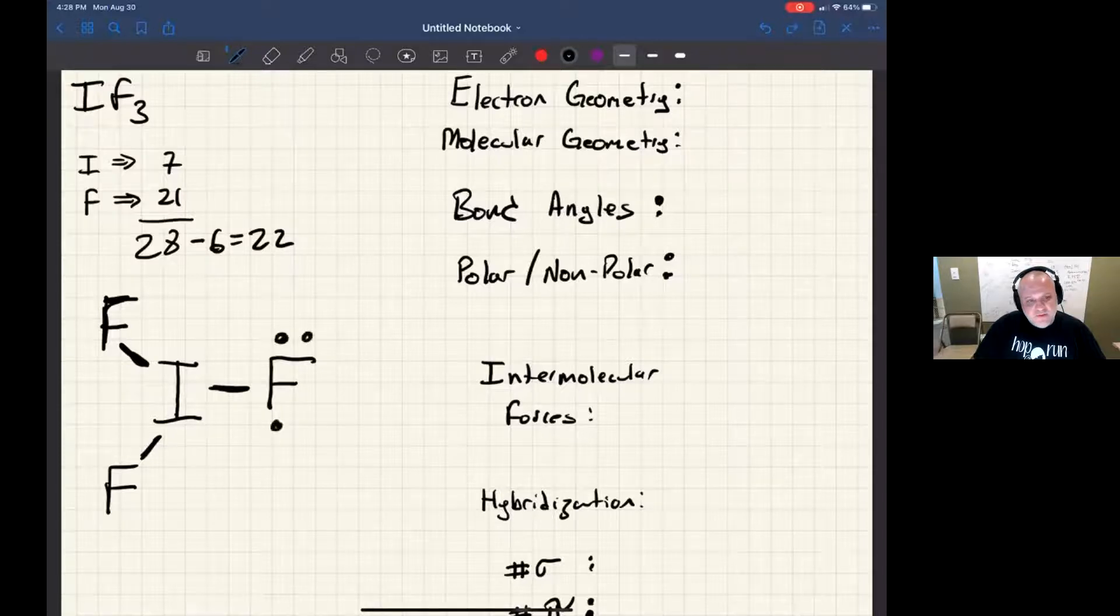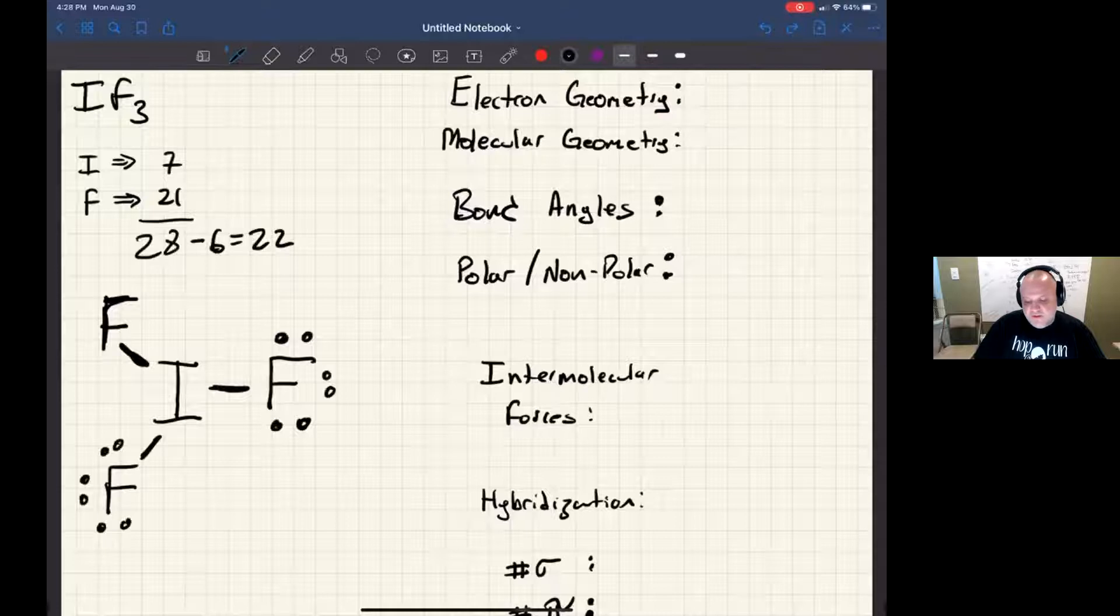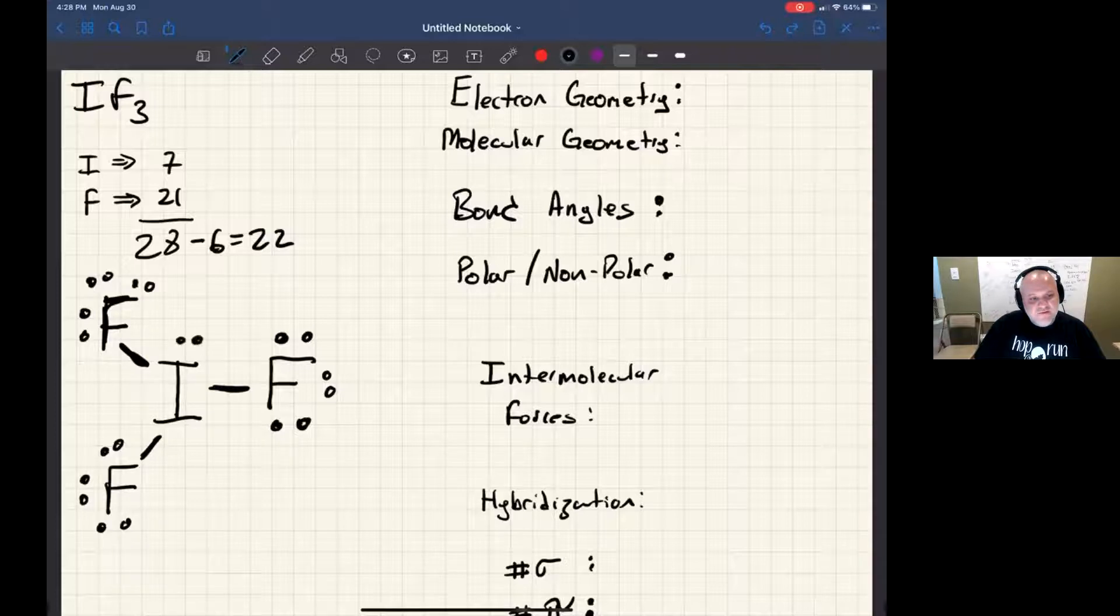So let's try some lone pairs. There's six, there's 12, there's 18. Now the fluorines all have octets. 19, 20—iodine has an octet, but what do I do with the last two?